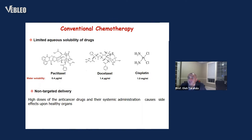Another issue which can be overcome with nanomaterials is non-targeted delivery. Many chemotherapeutic agents have good therapeutic outcomes especially on cancer cells in vitro, but when you move to in vivo and inject them systemically, those drugs don't go only to the cancer tumors — they also go to different organs and cause severe side effects. So nanoparticles can also help to increase the amount of drug that gets to the cancer tumors.